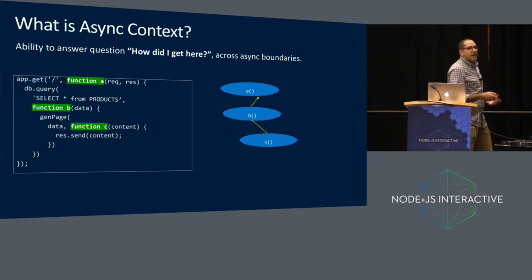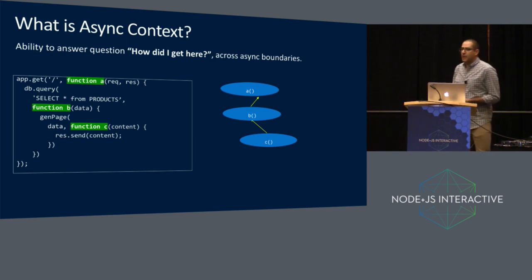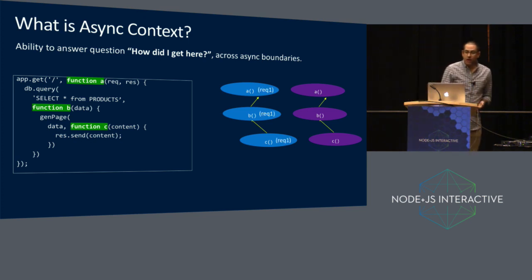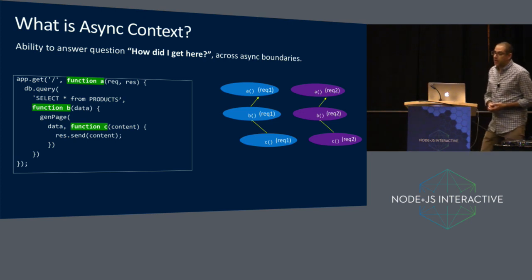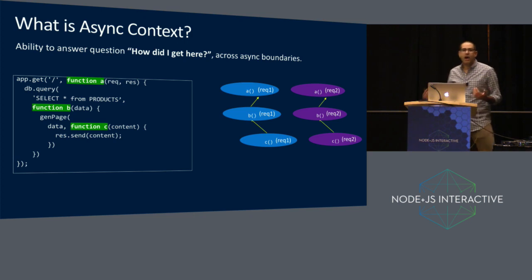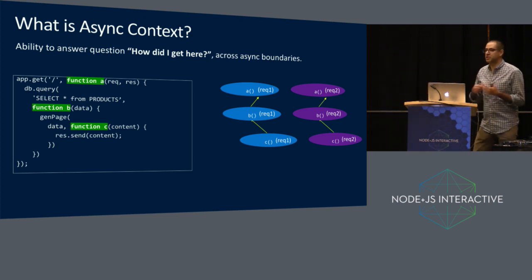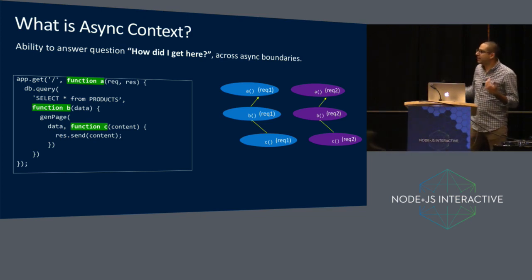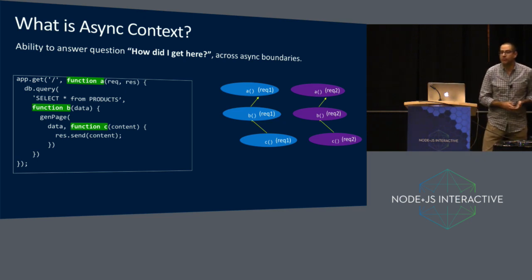But these aren't functions — these are invocations of functions. Perhaps you've got two requests that have come in: request 1 in blue and request 2 in purple. These are distinct. If you're in the invocation of function C in request 1 and you want to know how did I get here, you want to walk this path of asynchronous functions associated with request 1. You don't want that intermingled with request 2.